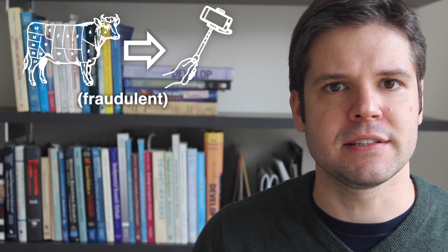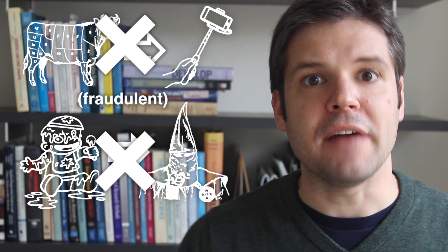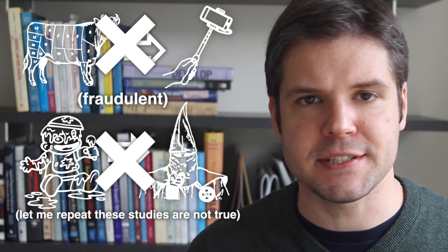One paper said that meat-eaters behaved more selfishly than vegetarians, and another said that a messy environment could make people more racist. At first people noticed a few figures that seemed to be identical between studies, which he brushed off as a misprint that he'd avoid in the future. But soon people noticed that the data were just too good to be true.